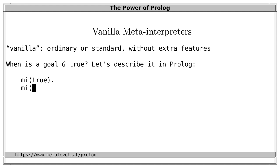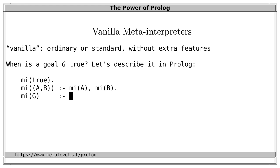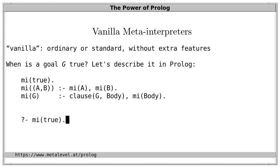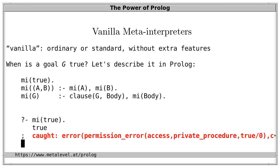What about other cases? The goal can be a conjunction A and B, which is true if A is true and B is true. The main case remaining is that G refers to a user-defined predicate. In that case, G is true if there is a clause with head G and the body of the clause is true — and we determine whether the body is true with our meta-interpreter. So we have three clauses: mi(true), mi((A,B)) if mi(A) and mi(B), and mi(G) if clause(G, Body) and mi(Body).